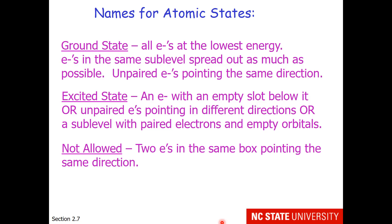Depending on if the rules are followed or not, we have some names for atomic states. The ground state has all electrons at the lowest energy. The electrons in the same sublevel are spread out as much as possible, obeying Hund's rule.